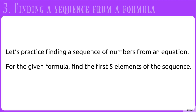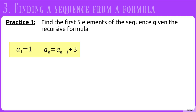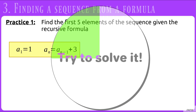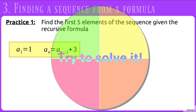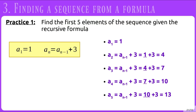Let's practice by finding a sequence of numbers from a given equation. For the recursive formula where a sub 1 is 1 and a sub n equals a sub n minus 1 plus 3, find the first 5 elements. You should have gotten the sequence 1, 4, 7, 10, and 13.